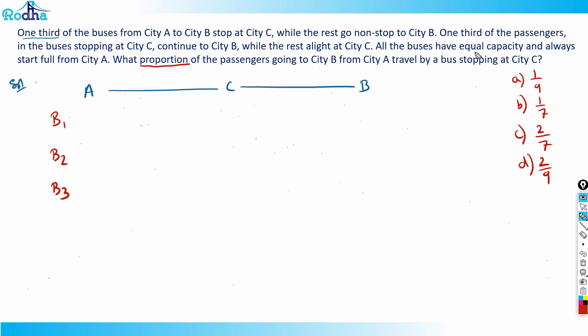If there are three buses and all the buses have equal capacity, and it's one third of the passengers, assume some passengers in multiples of three. Let's assume each bus has three passengers.